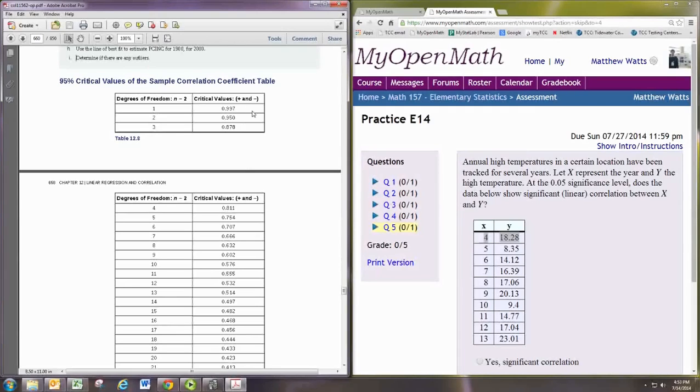So the critical value will be the cutoff. You have to be that number or greater to be considered significant correlation. Alright so first let's find out which row of the table we're working with.